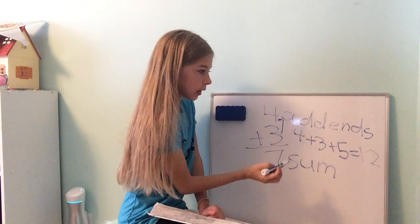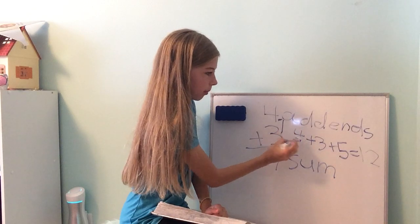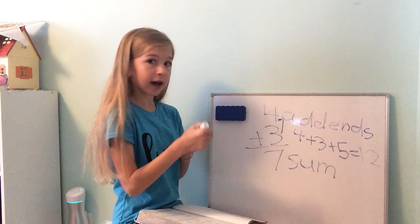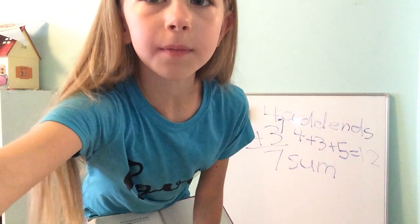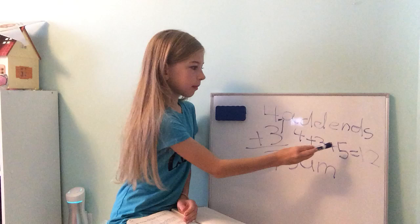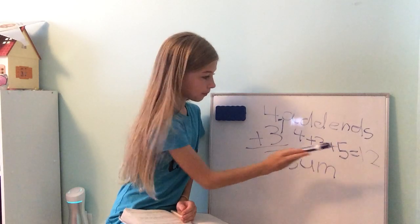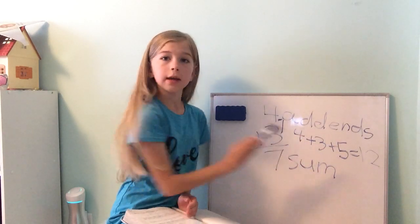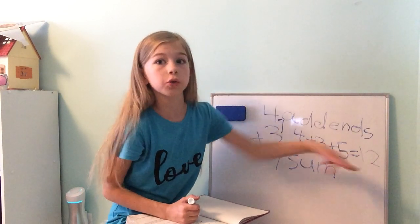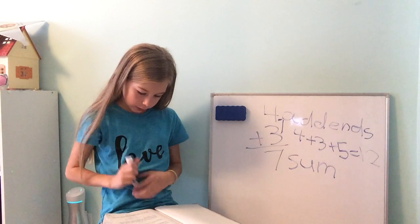Now to do this, you would have to do 4 plus 3 first, and then plus 5. So 4 plus 3 plus 5 equals 12. 4 plus 3 equals 7, plus 5 equals 12. That's what you would have to do.